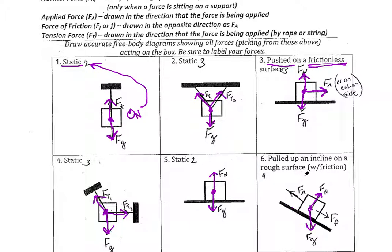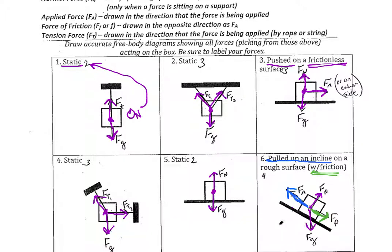We also know that this object is being pulled up an incline. You could argue it's either the applied force — somebody's pulling it up — or the force of tension; either one is fine. We should just know that there's always going to be friction on a surface. If we're pulling the object up this way, then friction is going to be resisting the pull — so friction acts in the opposite direction of our applied force.